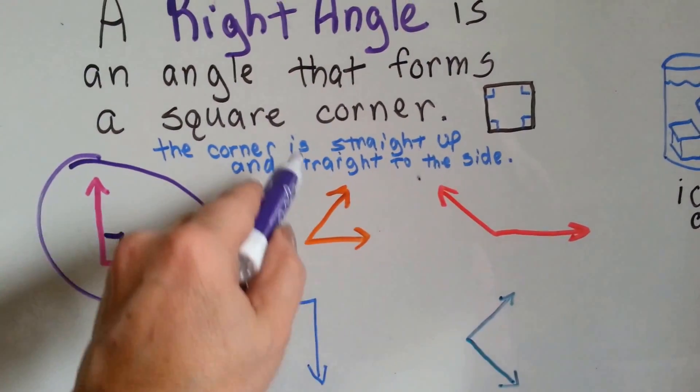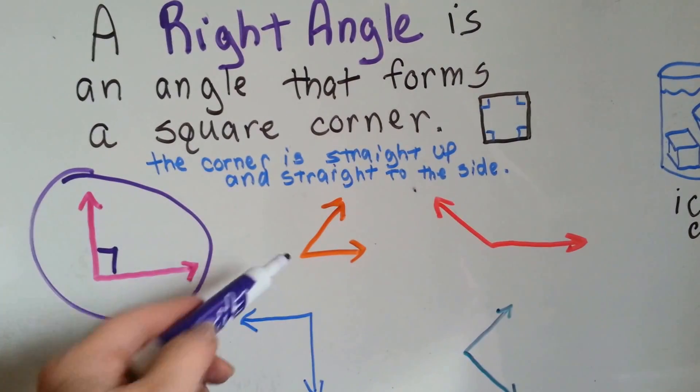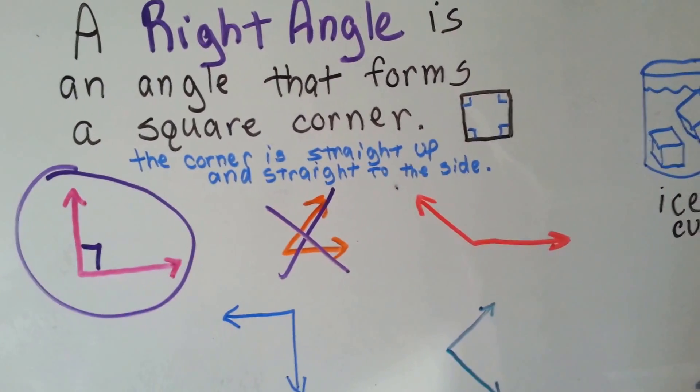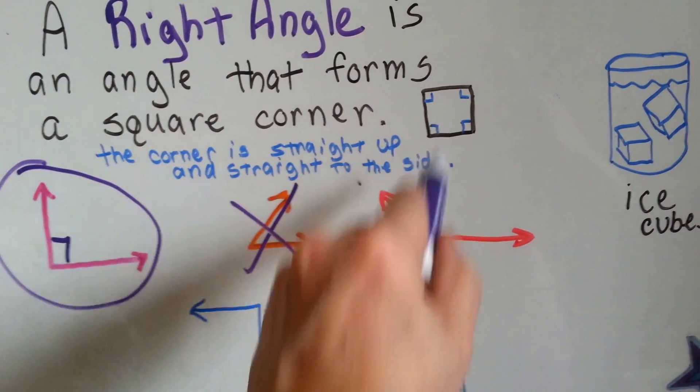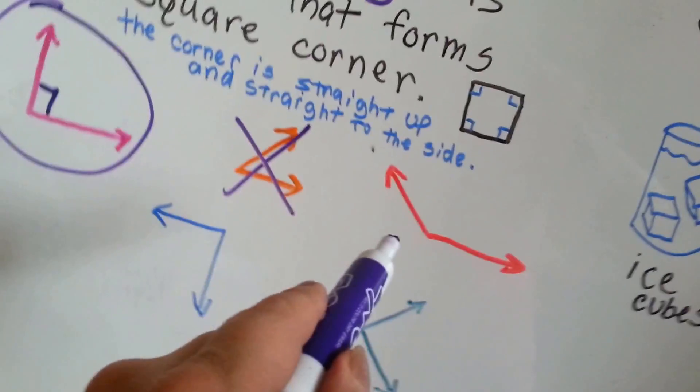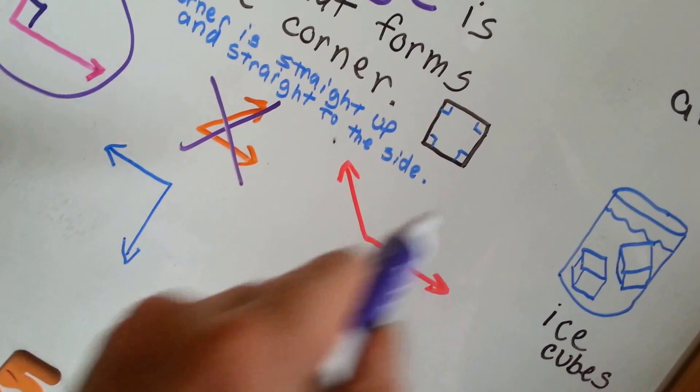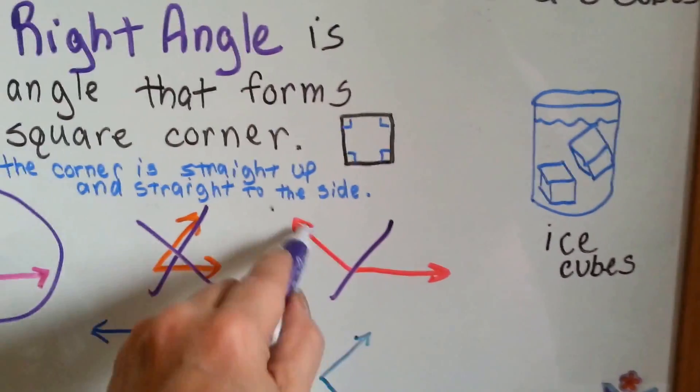Does this one go straight up and straight to the side? No. It's kind of bent inward, isn't it? So that's not a right angle. How about this one? Does it go straight up and straight to the side? Nope. So even if we tilted our camera this way and said it went straight up, it doesn't go straight to the side. So that's not a right angle either.